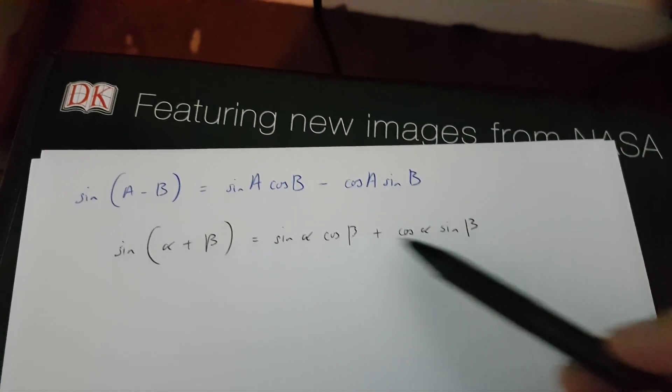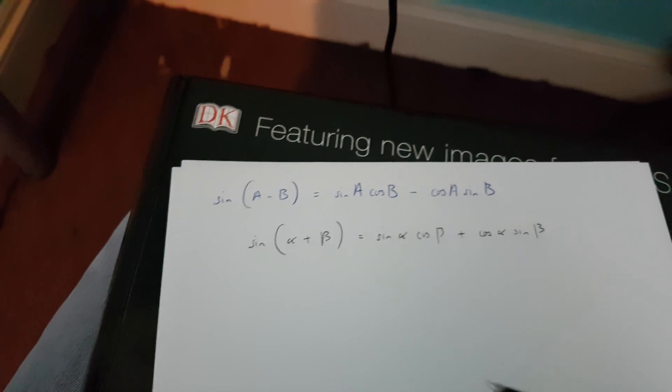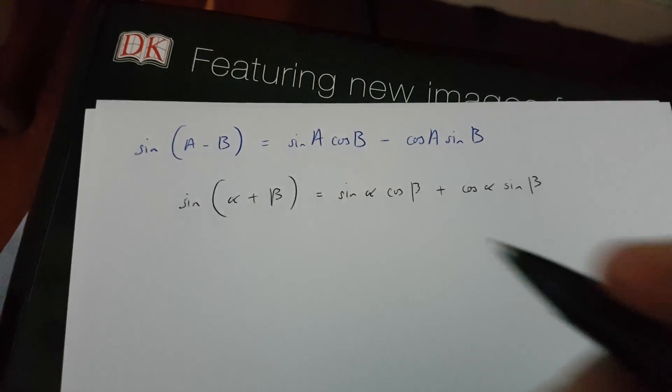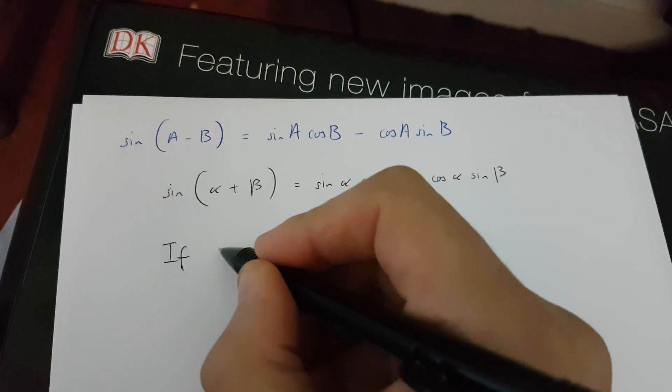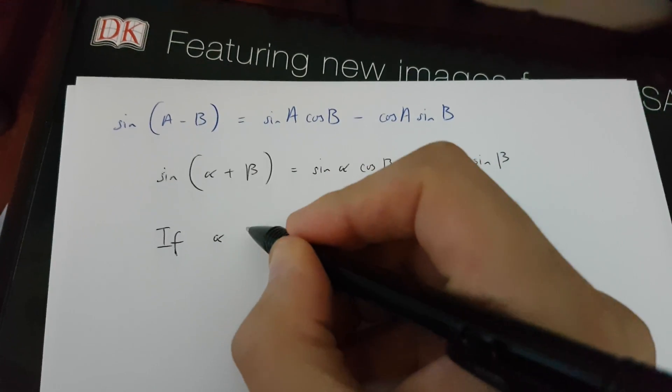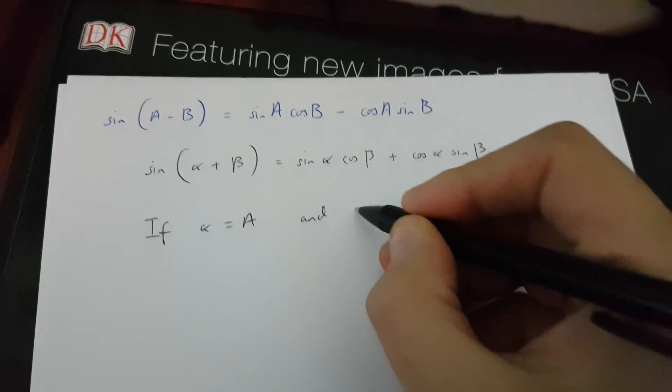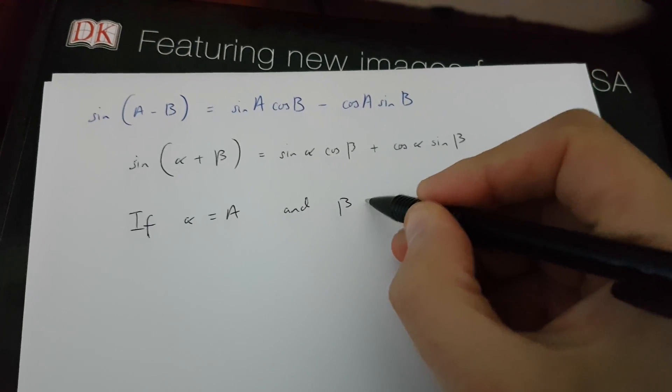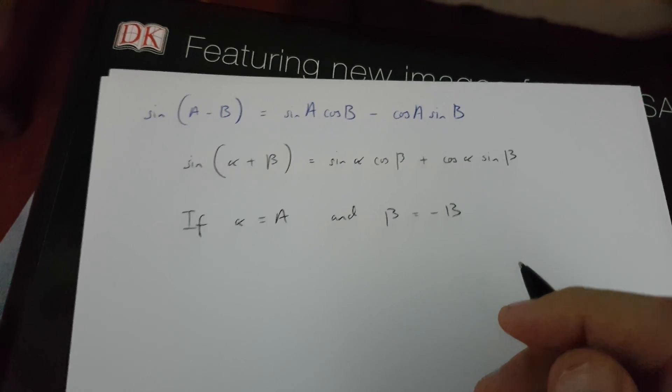Anyway, we need to know this formula over here to prove this up here. What we are going to say, okay, is that if alpha is equal to A and beta is equal to minus B, okay...